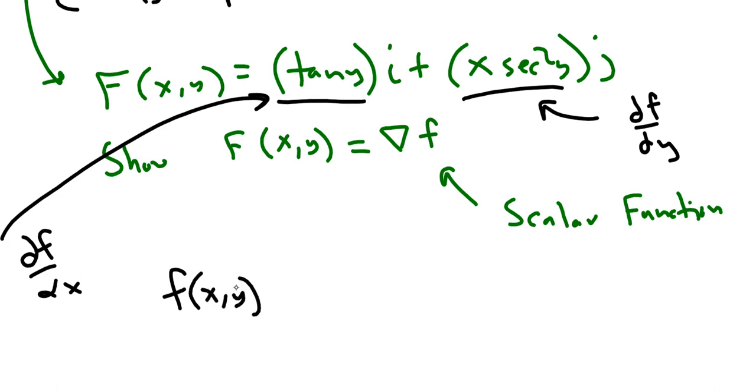Well, if the derivative of this thing with respect to x has to be tangent y, then it must have an x tangent y in it. The reason why is, if you took the derivative of x tangent y, and if x is the variable tangent y, it's just a constant, and the derivative would just be tangent y, just like the derivative of 5x is just 5.